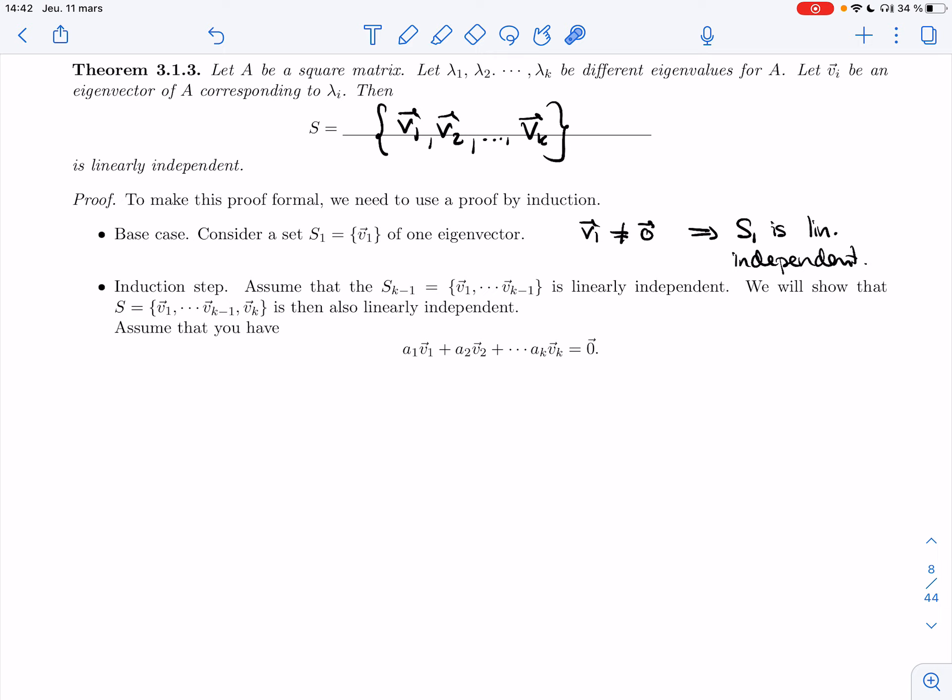Alright, ready for the induction step. I'm going to assume that the result is true for v_1 to v_{k-1}. I'm going to assume that that set is linearly independent. And I'm going to show that adding the extra v_k will not change that. It's also going to be linearly independent.